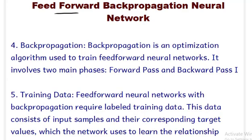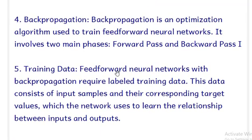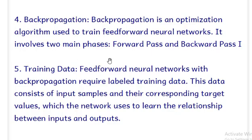We have training data consisting of labeled data. In the labeled data, we have a set of inputs and a corresponding target. We train the network so that we get the required target output. While learning is going on, the weights are adjusted.